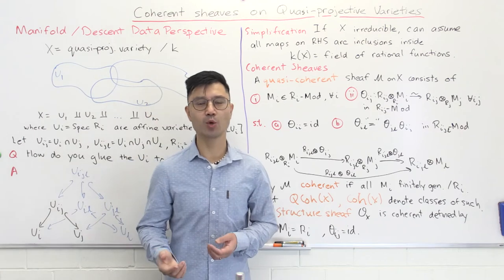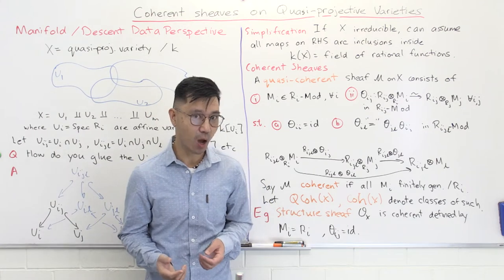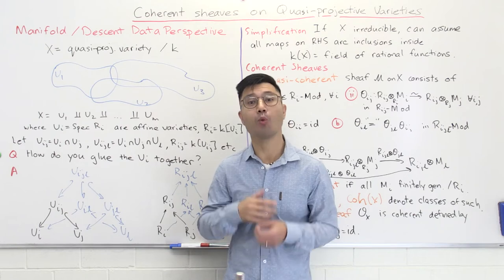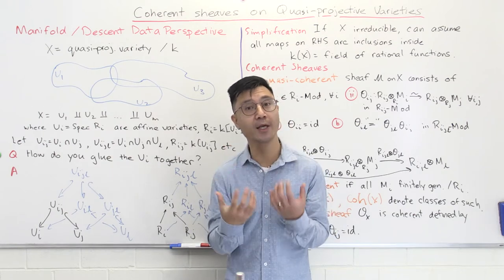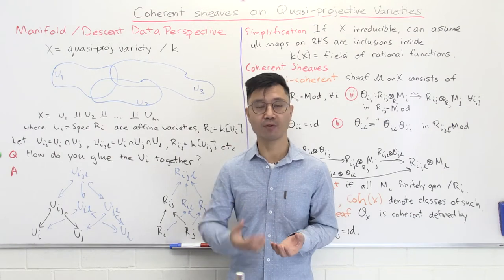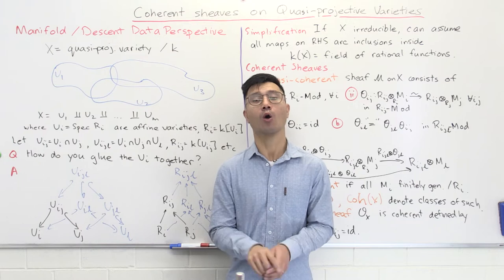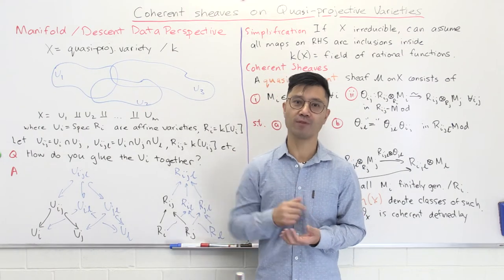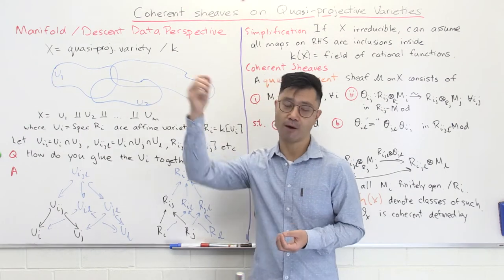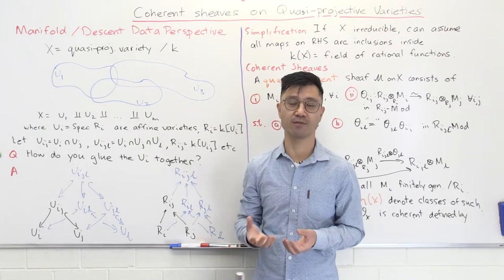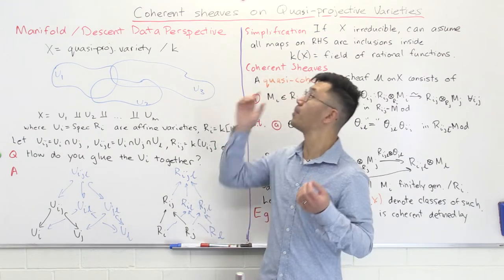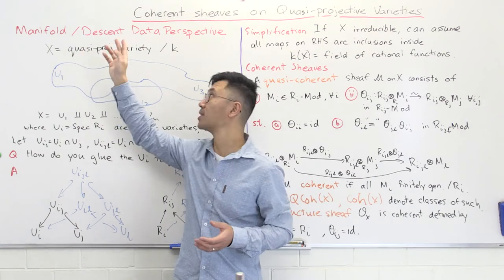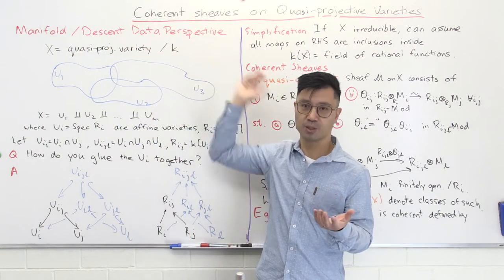Hi, I'm Daniel Chan from UNSW Sydney. Welcome to another adventure in pure mathematics. In this video, I want to give you a working definition of a coherent sheaf on a quasi-projective variety, which generalises the definition I gave in a previous video in this playlist for coherent sheaves on the projective line. The perspective I want to take is that of a manifold or descent data perspective.